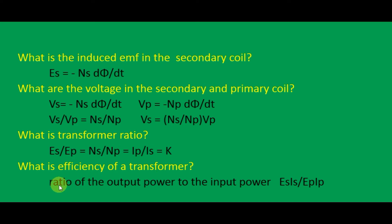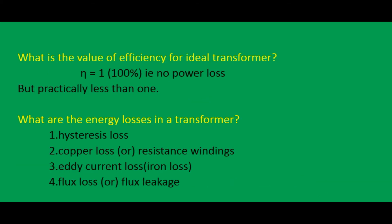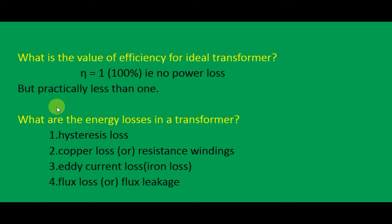What is the efficiency of a transformer? The efficiency of a transformer is defined as the ratio of output power to input power, that is ES times IS divided by EP times IP. The efficiency is represented by the letter eta. For an ideal transformer, eta equals 1, or 100%, meaning there is no power loss. But practically, eta is less than 1, so 100% efficiency is not achieved in practice.